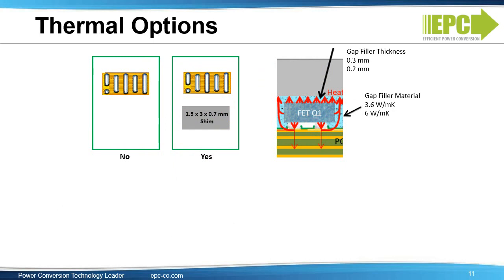Now let's look at several options for constructing our thermal system. In the green boxes, we show what the devices look like mounted down with and without a shim. The shim is made out of copper, with dimensions of 1.5 by 3 by 0.7 millimeters — about the same size as the device — mounted right next to it. The right-hand cross-section shows the device mounted down with a heat sink in gray above. We're going to vary the gap filler thickness from 0.2 to 0.3 millimeters and vary the gap filler material between the 3.6 and 6 watt per meter Kelvin options.